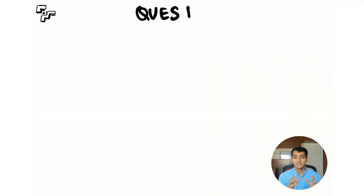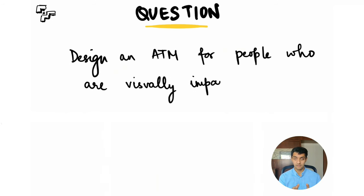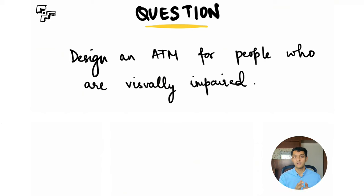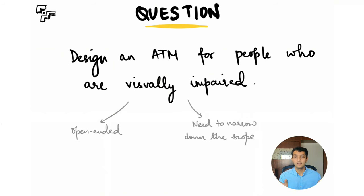Now that you've understood the CIRCLES framework, let me take you through a sample question solved using this framework. The question is: design an ATM for people who are visually impaired. Before I proceed, if you want to solve this along with me, I'd recommend pausing the video, using the CIRCLES framework with pen and paper, and then coming back. When I first look at this question, it strikes me as fairly open-ended, requiring clarifying questions to narrow down the scope — which is exactly what step one is about.